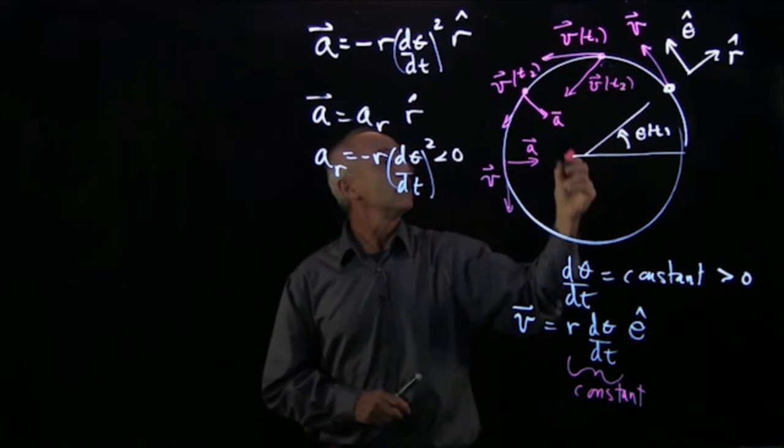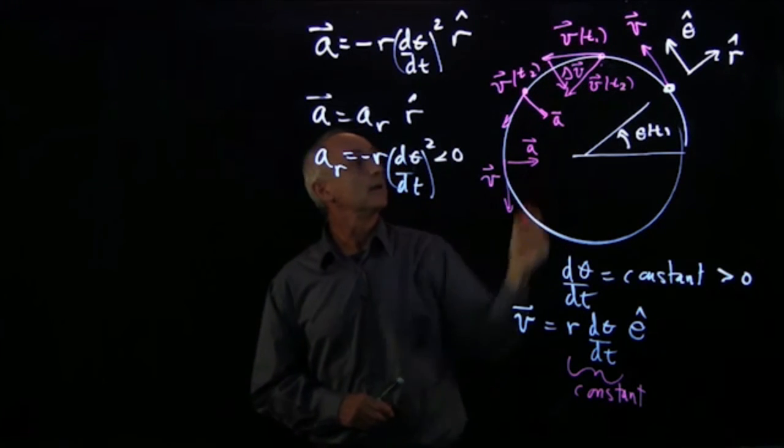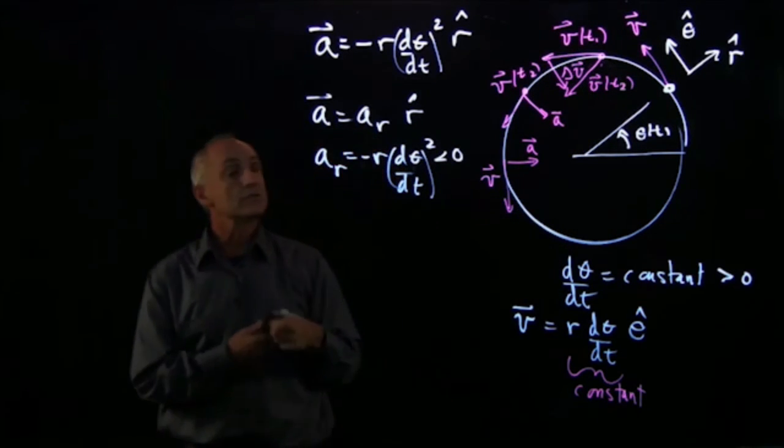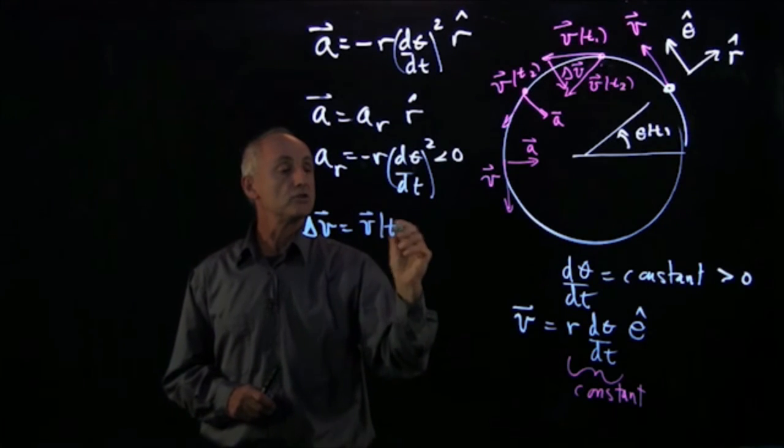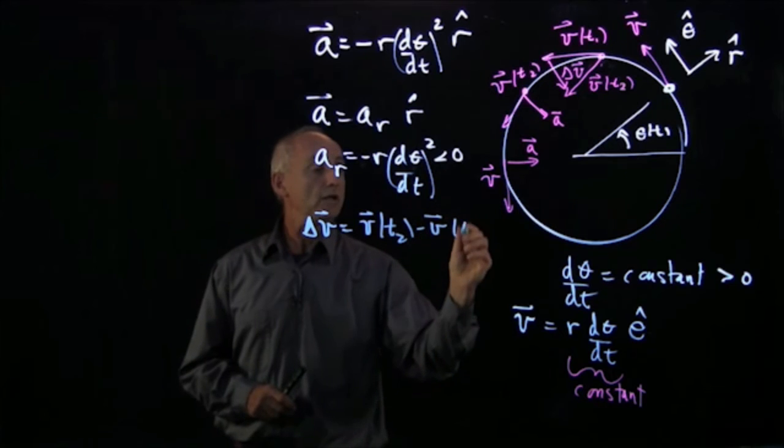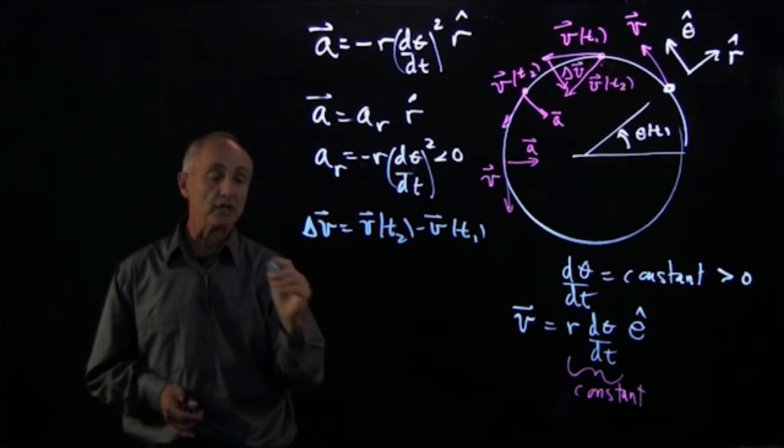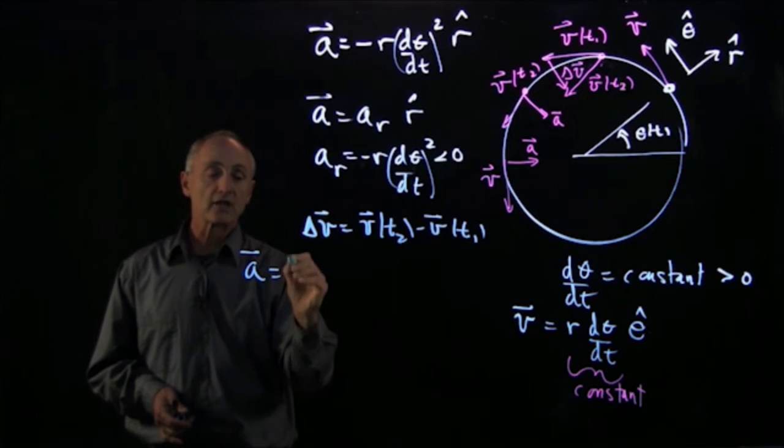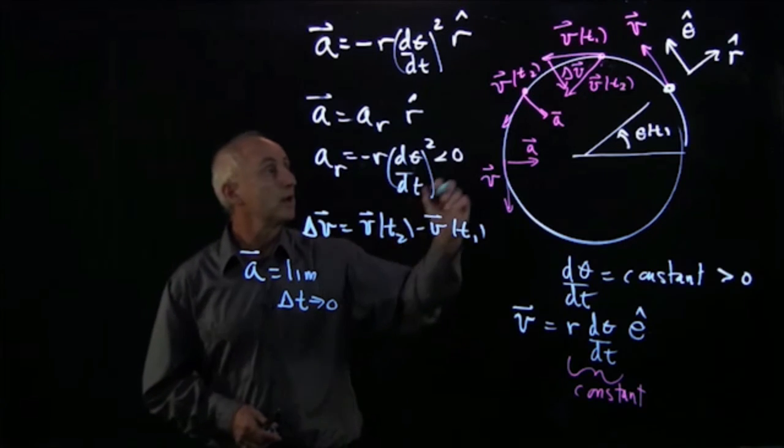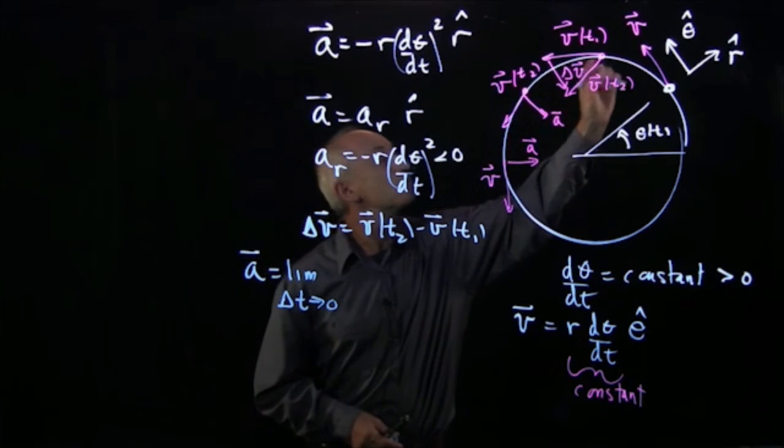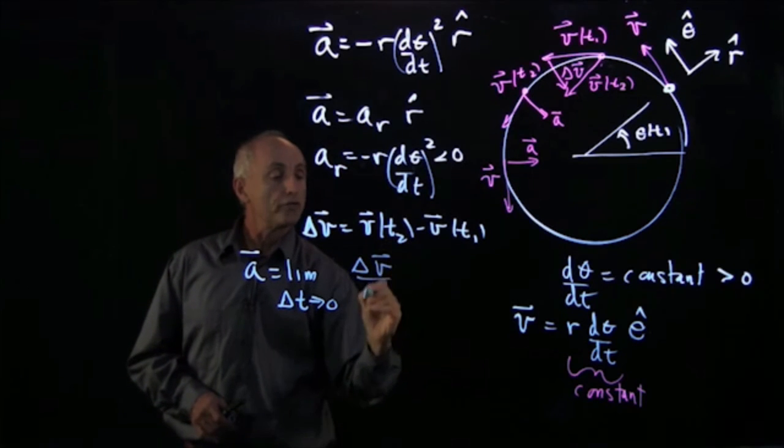And if we move them tail to tail, v(t2), and take the difference, Δv, where Δv is equal to v(t2) minus v(t1), then we can get an understanding why the acceleration is pointing inward. Because recall that acceleration, by definition, is a limit as Δt goes to 0. That means as this point approaches that point, of the change in velocity over time.